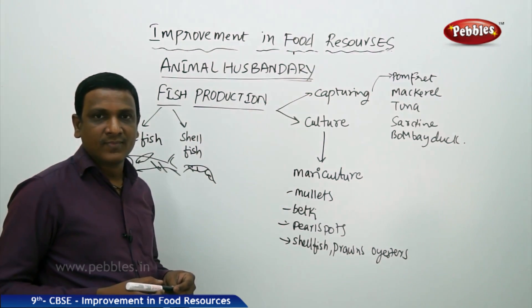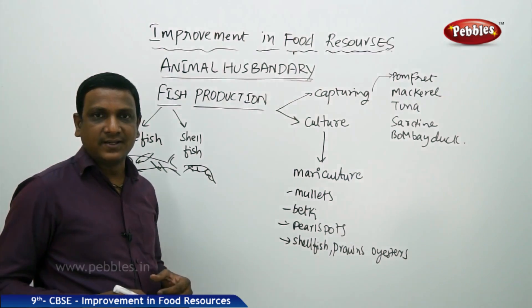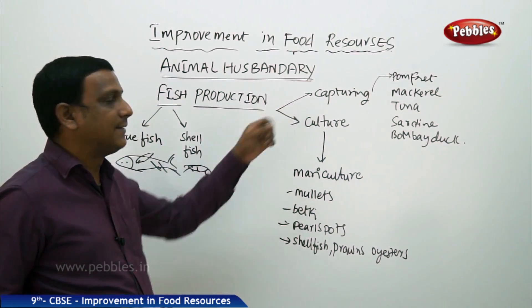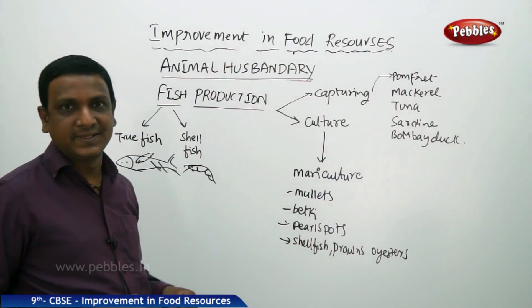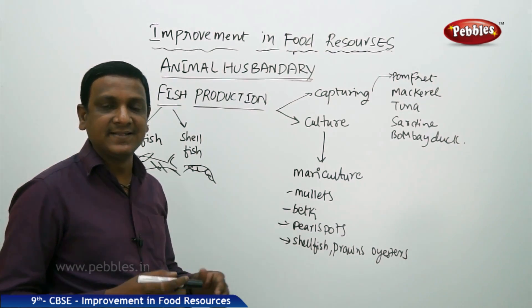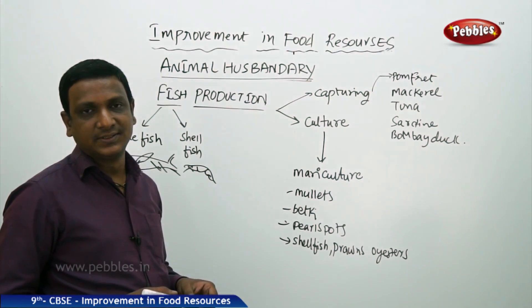There are two methods by which we get fish: one is capturing — catching the fish from natural sources — and the second is culturing, which means growing the fish.